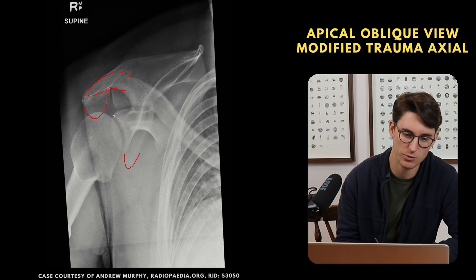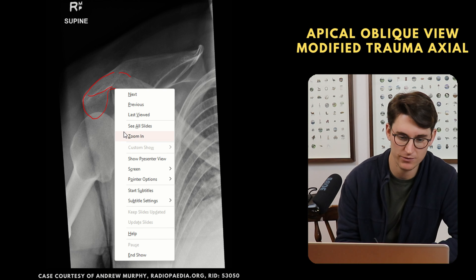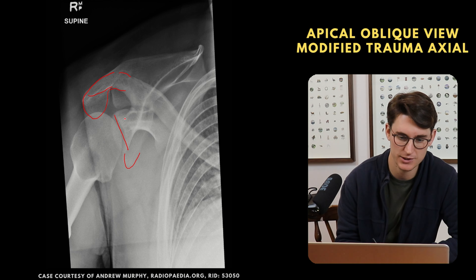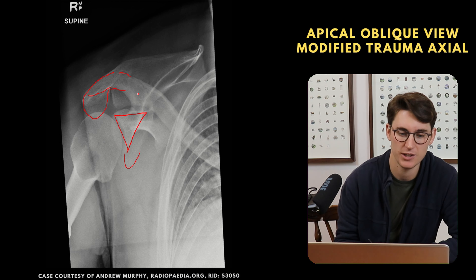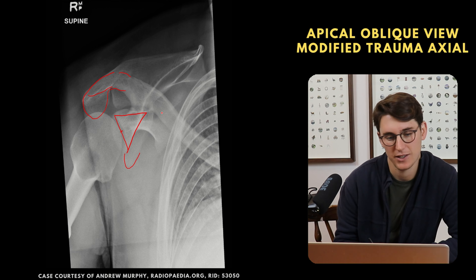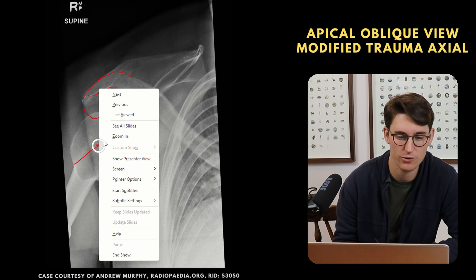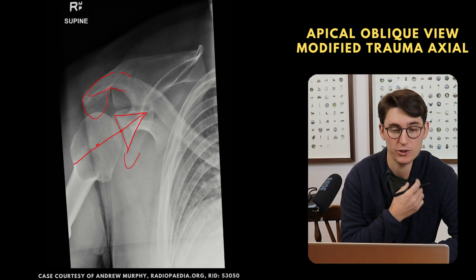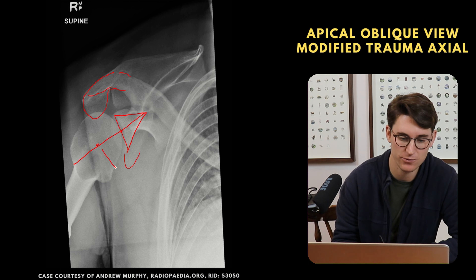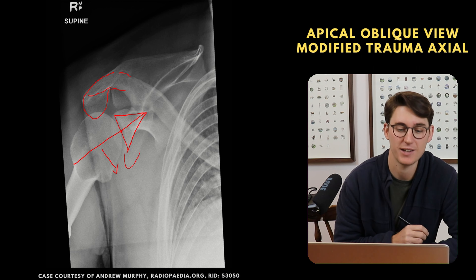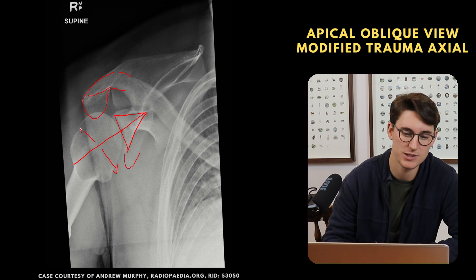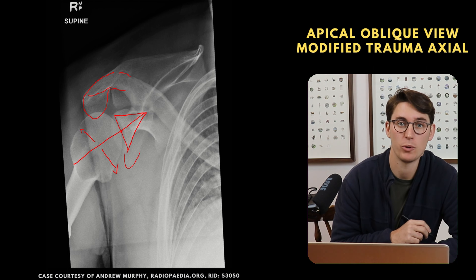On the apical oblique view, we draw a line from the superior to the inferior part of our glenoid to make a triangle representing the glenoid fossa. Bisecting from the apex through that triangle should pass right through the center of our humeral head. If the humeral head is displaced forward, we can suspect an anterior dislocation; if it's displaced backwards, a posterior dislocation.